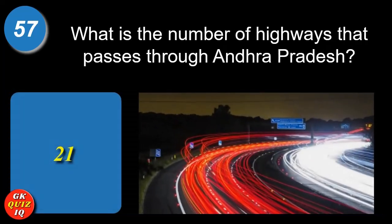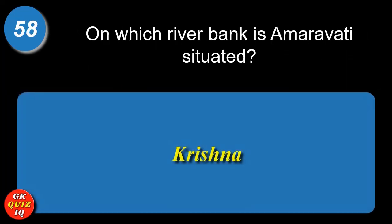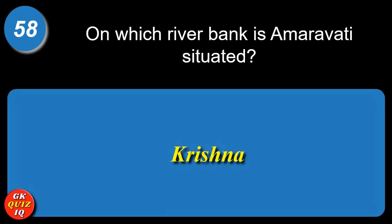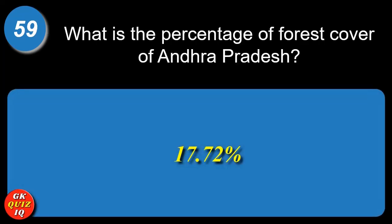What is the number of highways that pass through Andhra Pradesh? 21. On which river bank is Amaravati situated? Krishna. What is the percentage of forest cover of Andhra Pradesh? 17.72%.